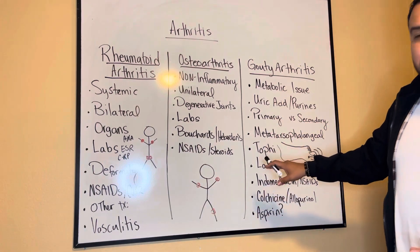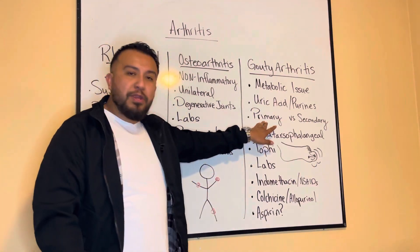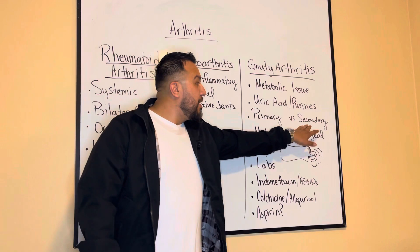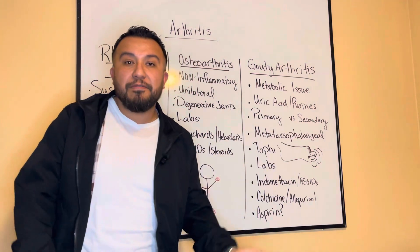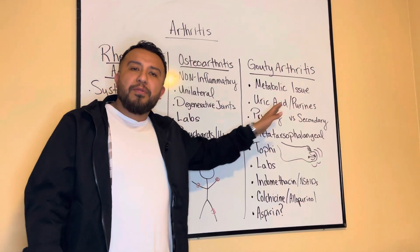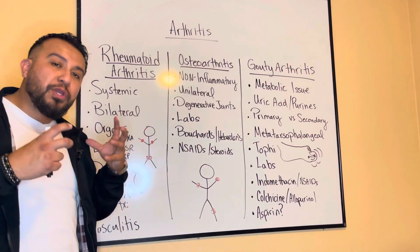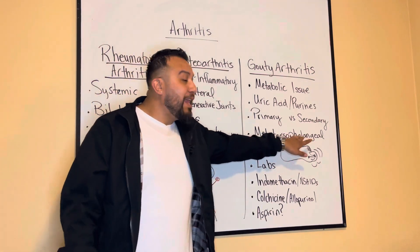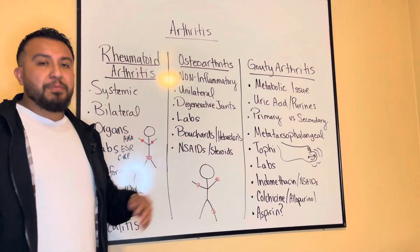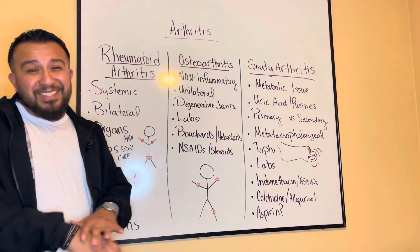Gouty arthritis is the third type, and it's a little different because it's a metabolic issue. It can be primary — where your body is not excreting enough uric acid relative to how much it has — or secondary, attributed to issues like kidney failure or ingestion of certain medications like aspirin. The main thing to remember is that it's a metabolic issue where uric acid accumulates, generally in the metatarsophalangeal area — usually the big toe — though it can accumulate in any joint or even on the skin.